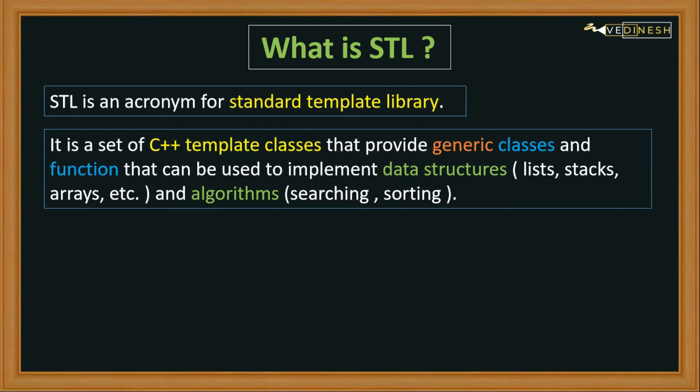Talking about algorithms, we have lots of them. For example, we may want to sort our data in ascending or descending order, or search for a particular element in our data — that is what algorithms are for.